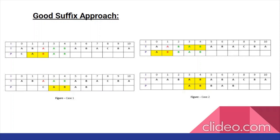In the worst case scenario, you could find that the pattern string has characters that are all duplicates of one another — for example, A, A, A, A, A — and the text string also includes characters that are all duplicates — for example, A, A, A, A, A, and so on. In that example, we would be checking every index of text against every index of pattern until the index of the text size minus the pattern size. This is extremely close to a naive algorithm and almost defeats the purpose of using a Boyer Moore search algorithm.